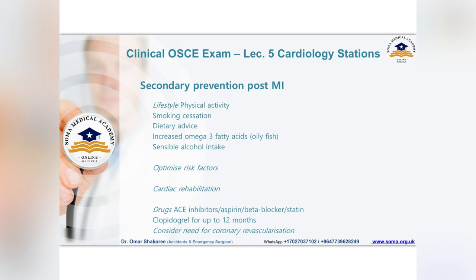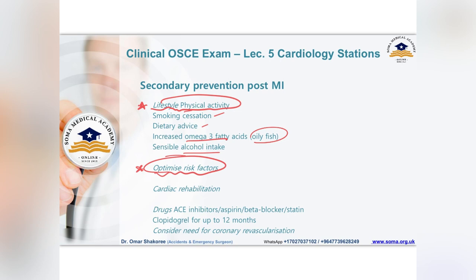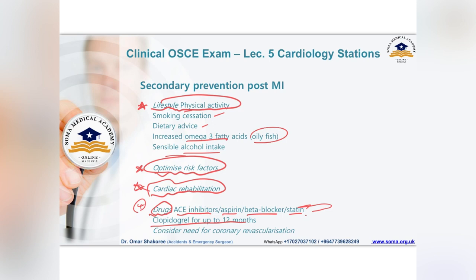If asked about secondary prevention of myocardial infarction, there are four options. First, lifestyle changes: physical activity, stopping smoking, dietary advice, increased omega-3 fatty acids and oily fish, and sensible alcohol intake. Second, optimize the risk factors. Third, cardiac rehabilitation. Fourth, main drugs: ACE inhibitors, aspirin, beta-blocker, and statin — these reduce secondary MI. Clopidogrel for up to 12 months. Also consider coronary revascularization.